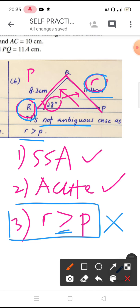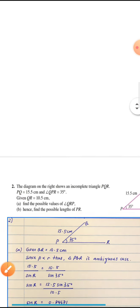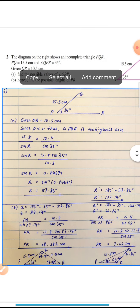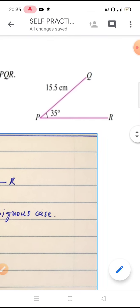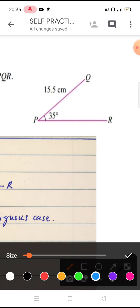So class, hopefully through this example you know how to determine the ambiguous cases. Next we move on, question 2. Question 2, we have been given this triangle, based on this given triangle we have been informed that QR is 10.5 cm.